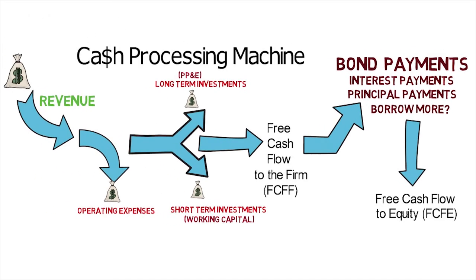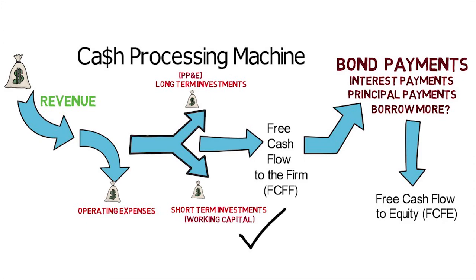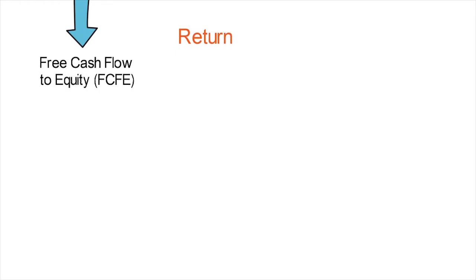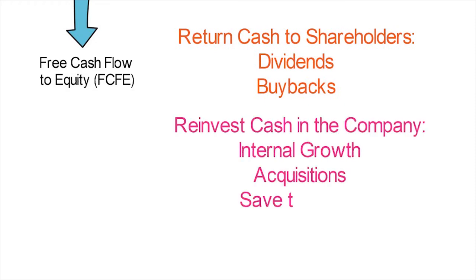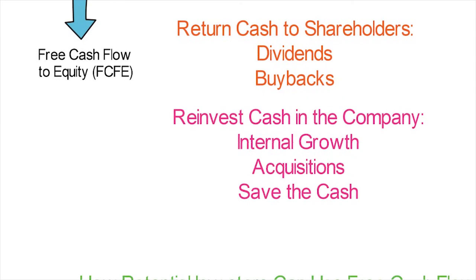Free cash flow to equity is what remains for investors in the company's stock after funding working capital needs, fixed capital needs, and debt financing. Now, this is not necessarily what the stock investors get — the board of directors still gets to decide that. The company can use that free cash flow to pay out dividends, or perhaps do stock buybacks, or it could elect to keep that money internally for the company.